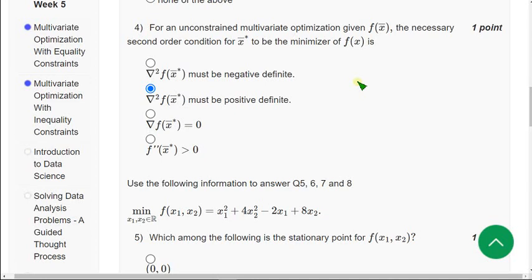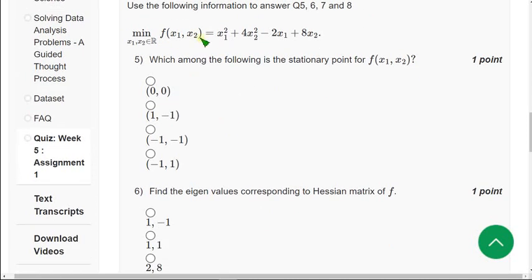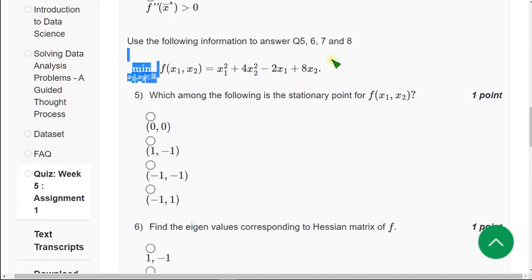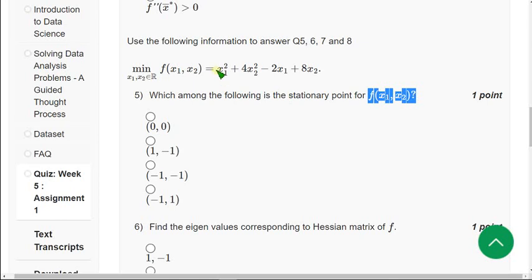And moving on to the fifth one. Guys, here actually, for fifth, sixth, seventh and also eighth equations, it will depend on this equation only. So, f(x1, x2). The equation is x1 square plus 4x2 square minus 2x1 plus 8x2. So, the first question for, according to this equation, that is, fifth question. Which among the following is a stationary point for f(x1, x2)? They are asking the stationary point for this function.